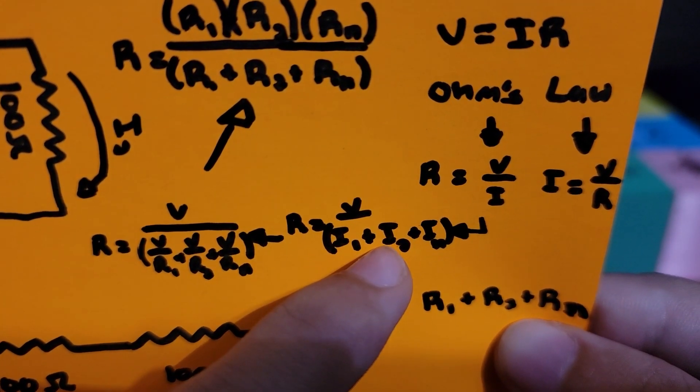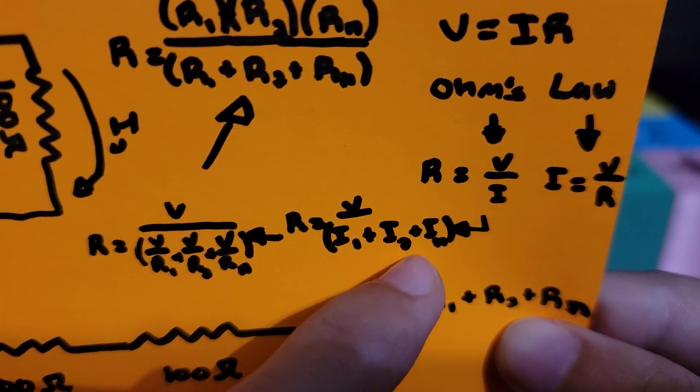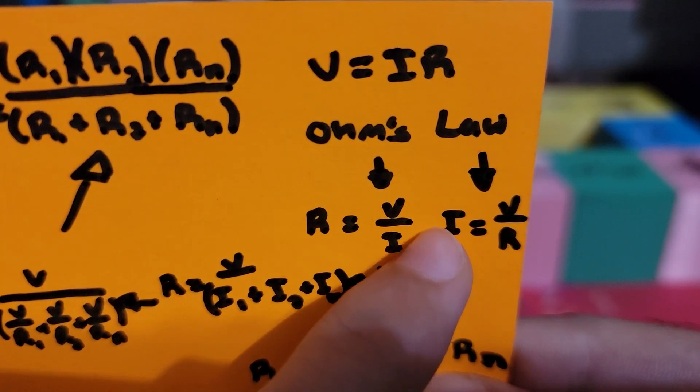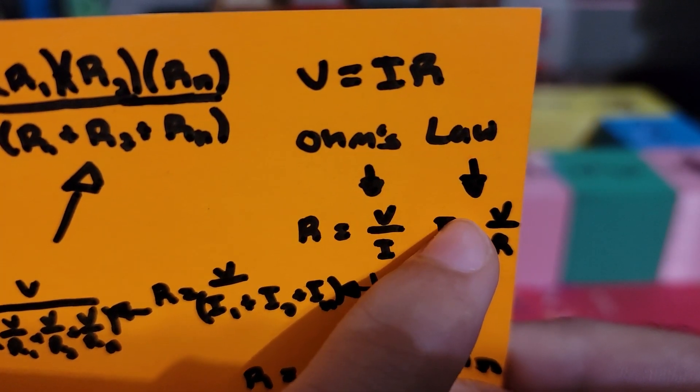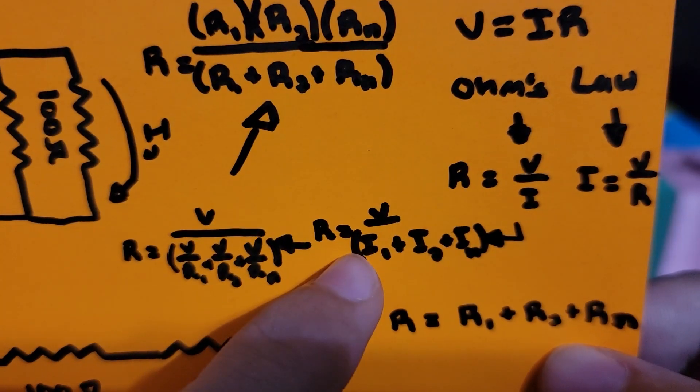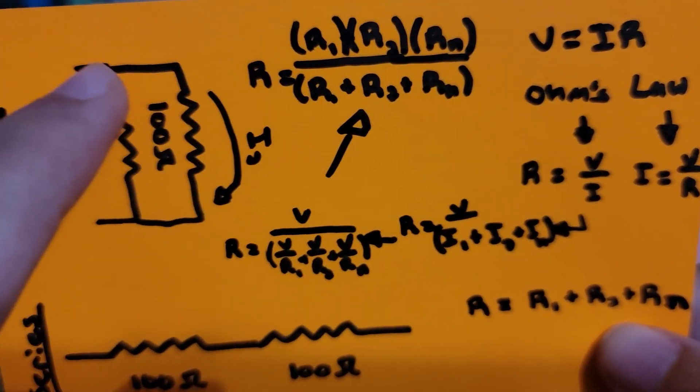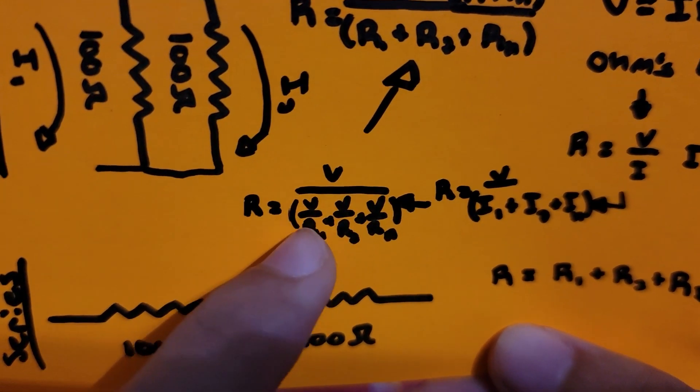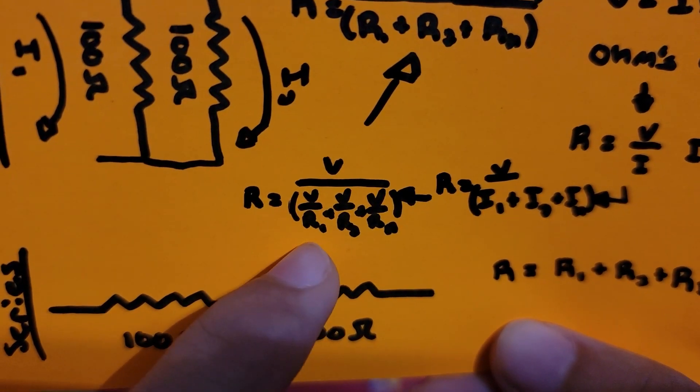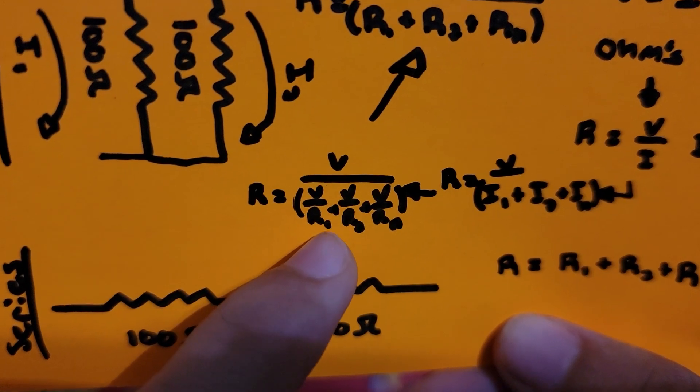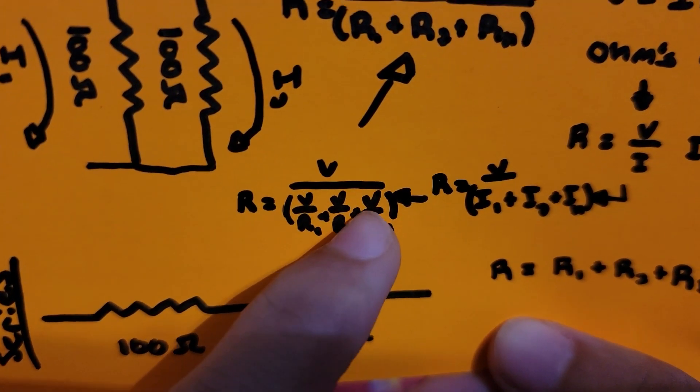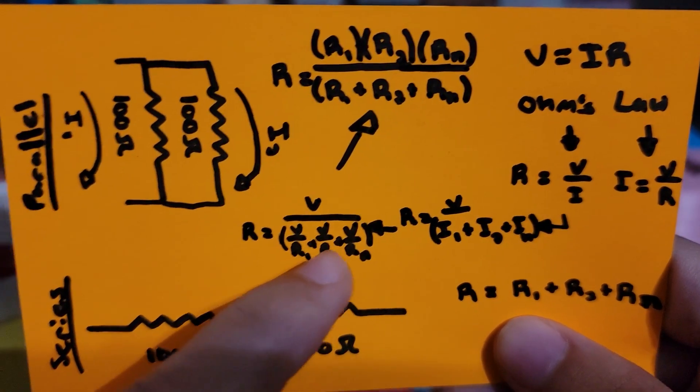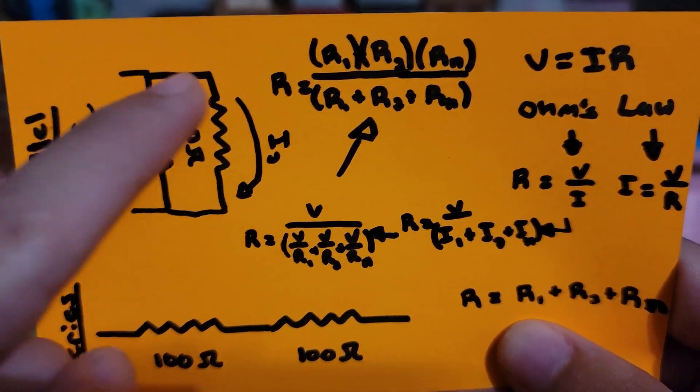Again using Ohm's law solving for the current this time, which will equal voltage over resistance, you substitute i for v over r for each parallel circuit that's connected, resulting in resistance being equal to voltage over voltage over the first resistor plus voltage over the second resistor plus voltage over any other resistor connected in parallel. Since each of these voltage values is the voltage value here behind the resistor, you can take out that voltage then cancel out the voltages.